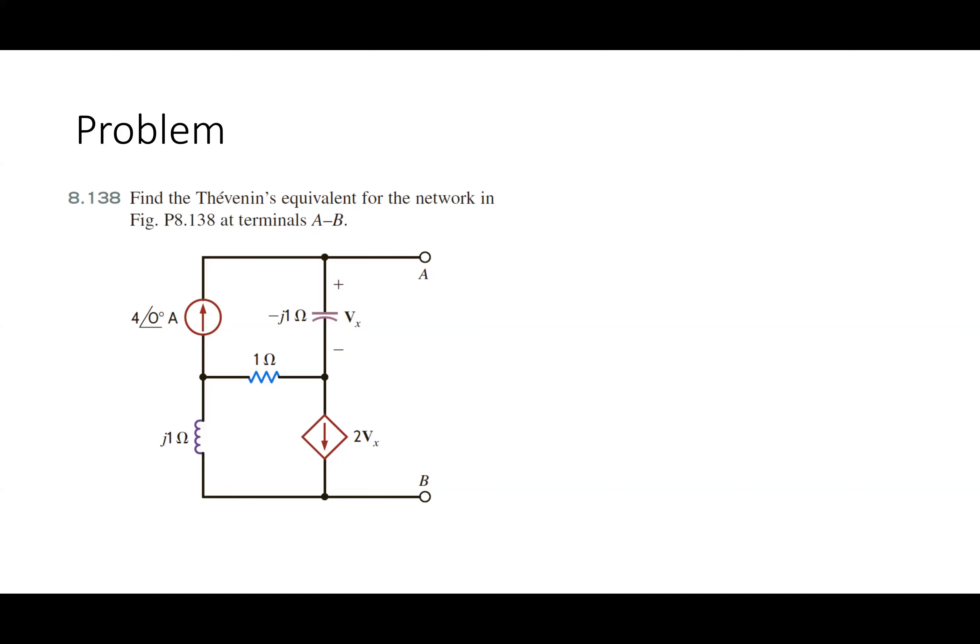Part of what confused people on the exam: I have a current source that depends on a voltage — a current that is 2Vx, where Vx is a voltage. That is not a voltage source; it's a dependent current source. We use these all the time in modeling — for example, a generator has a voltage source inside that depends on the speed of the shaft.